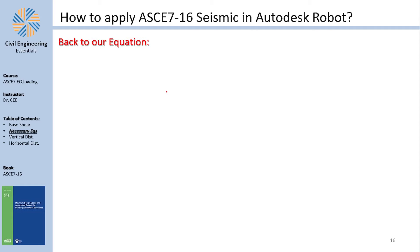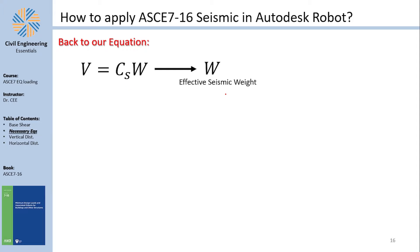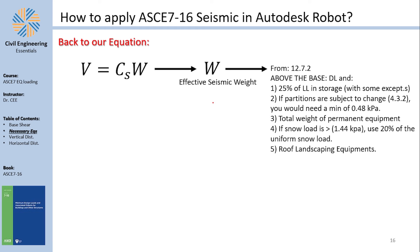Back to our equation: base shear V = Cs × W. W is the effective seismic weight. According to section 12.7.2, it includes everything above the base — dead load, self-weight of the structure, and other applicable items. It must be above the base level.